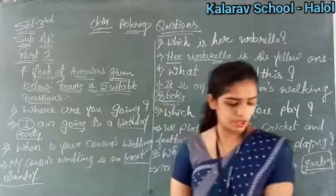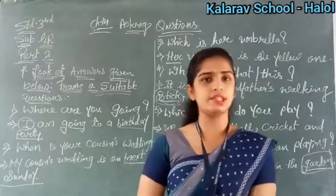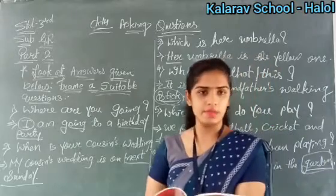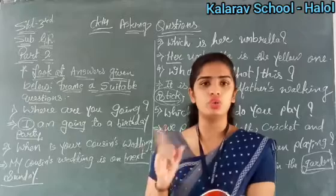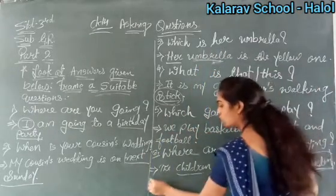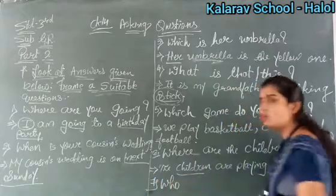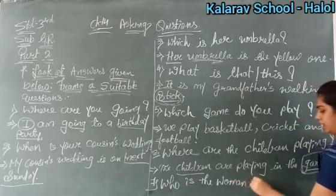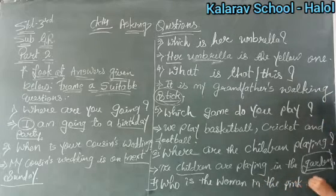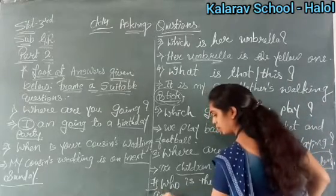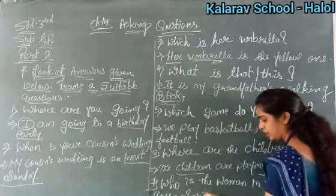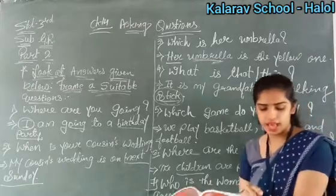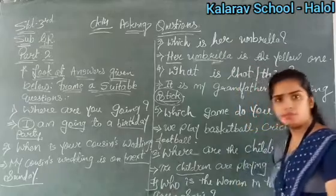Now see the seventh number. The answer given is: 'The woman in the pink and green saree is my mother.' We want to know about a person, so we use 'Who.' The question is: Who is the woman in the pink and green saree? Answer: The woman in the pink and green saree is my mother. Clear?